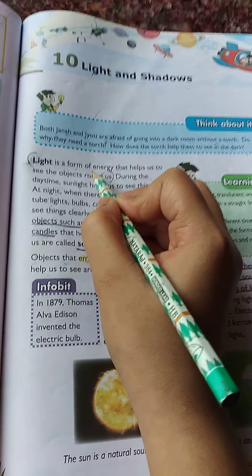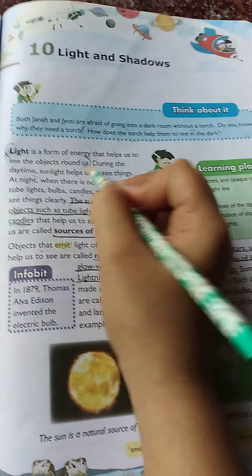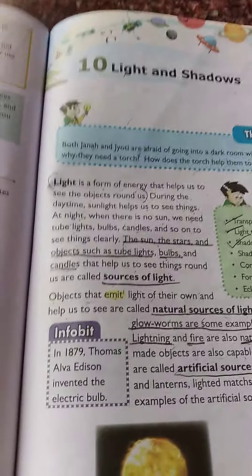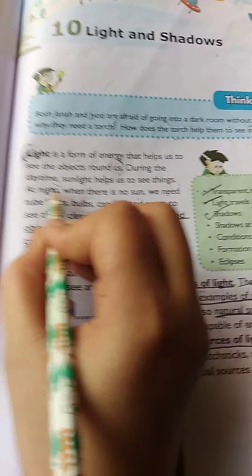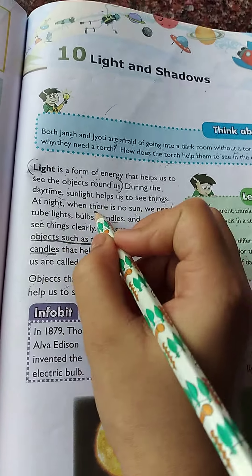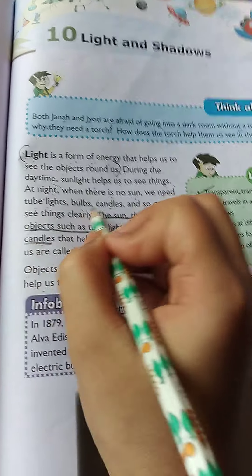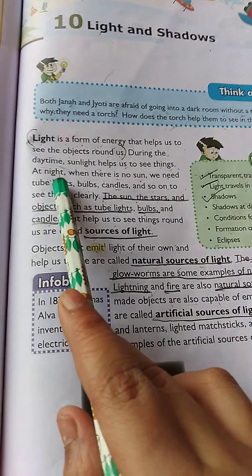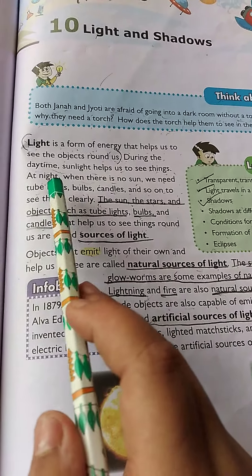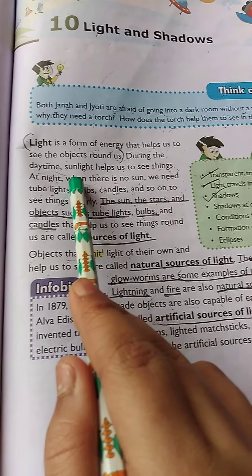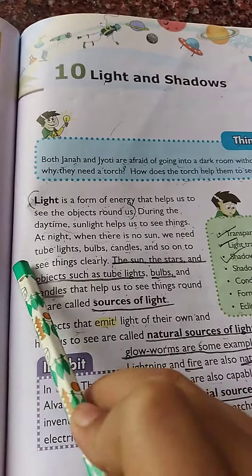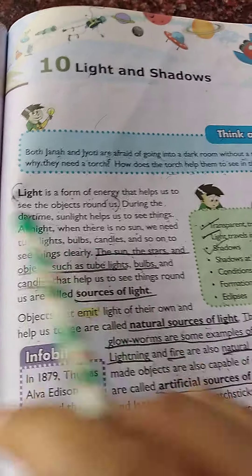What is light? Light is a form of energy that helps us to see the objects around us. During the daytime, sunlight helps us to see things. At night, when there is no sunlight, we need lights, bulbs, candles, and so on to see things clearly. At daytime everybody sees with the help of sunlight, and at night we use tube lights, bulbs, candles, and many more things to see clearly.